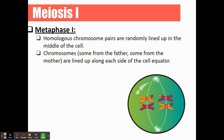In metaphase one — remember, metaphase starts with M and middle starts with M — the homologous chromosome pairs are going to randomly line up in the middle of the cell. You'll notice there's a little bit of DNA transfer here, where alleles switch over — this is called crossing over, which we'll talk about in just a second. Chromosomes, some from mom and some from dad, line up along the cell's equatorial plate, which is just the middle of the cell.